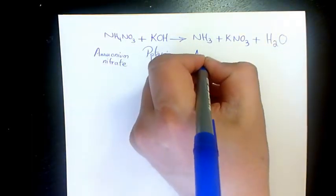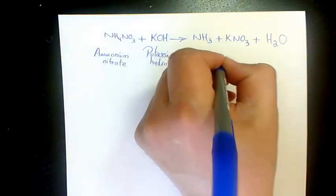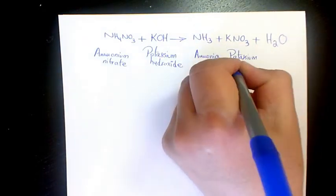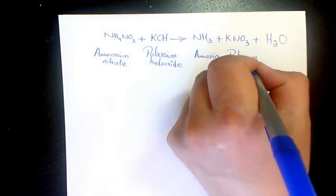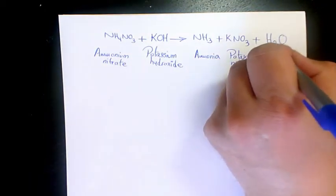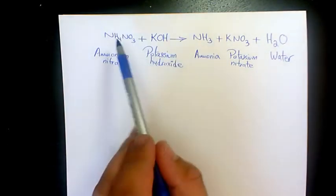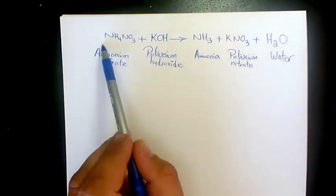NH3 is ammonia, KNO3 is potassium nitrate, and H2O is water. Let's see how to balance on the left hand side.